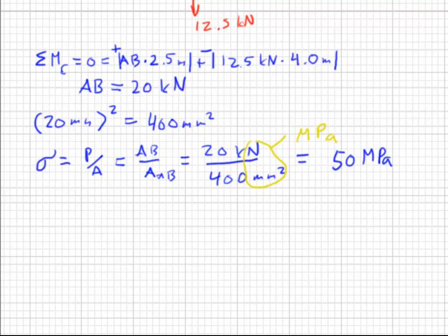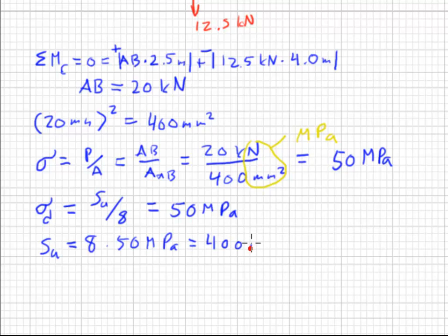Considering this is a repeated load, you are given that the design stress should be equal to the ultimate stress divided by eight. So we're going to set this equal to our calculated stress of 50 megapascals, solving for the ultimate stress of our material. We end up with 400 megapascals.